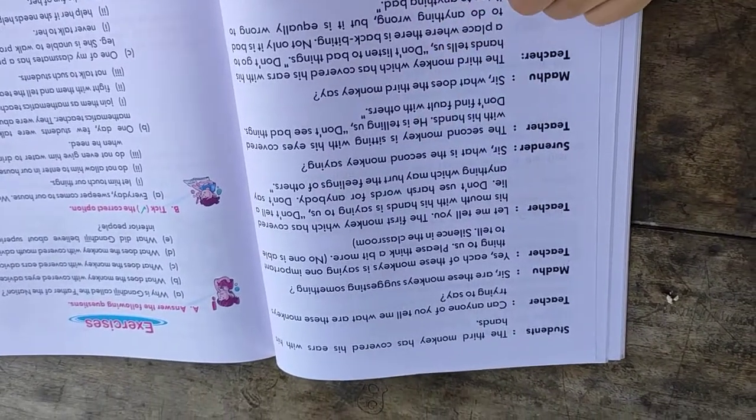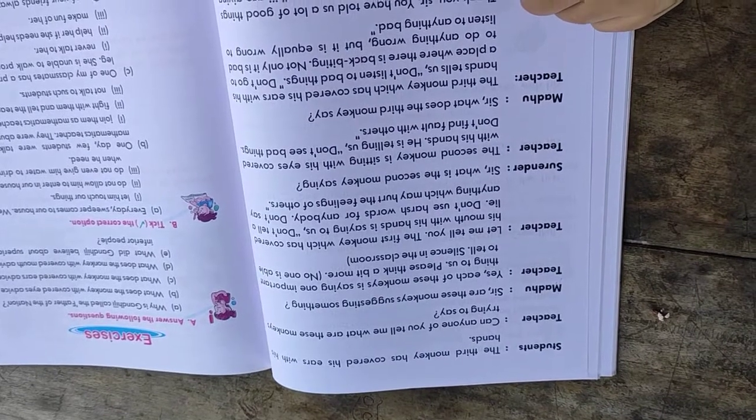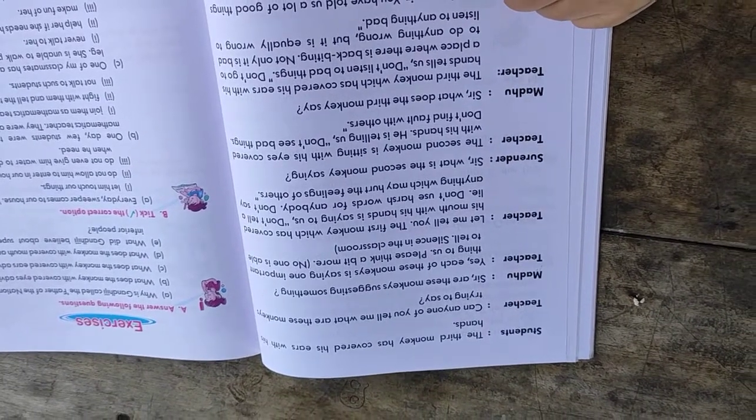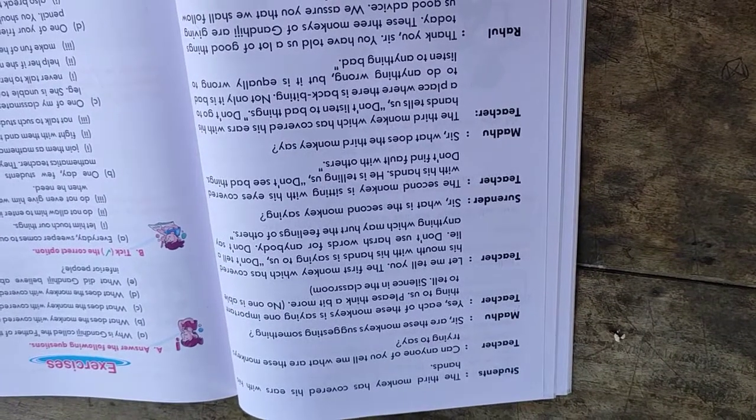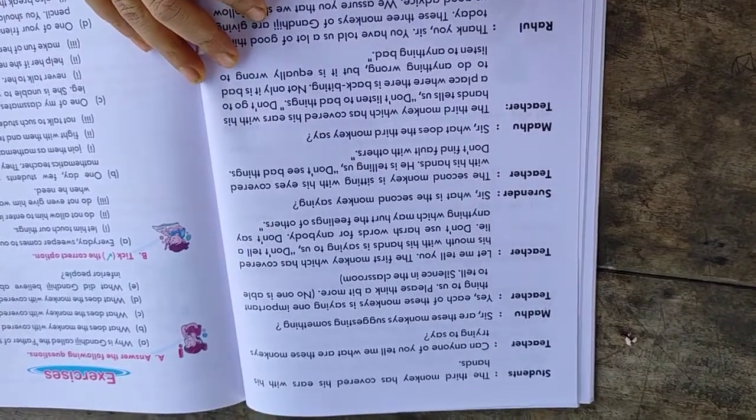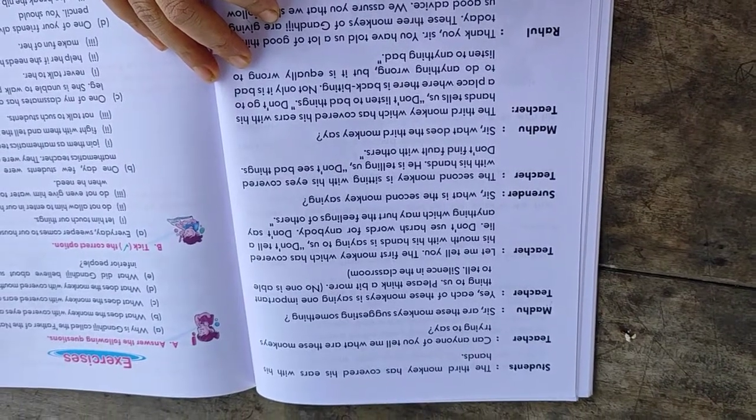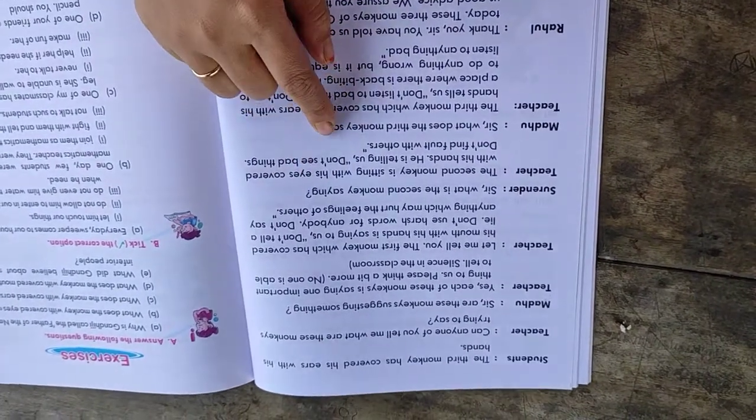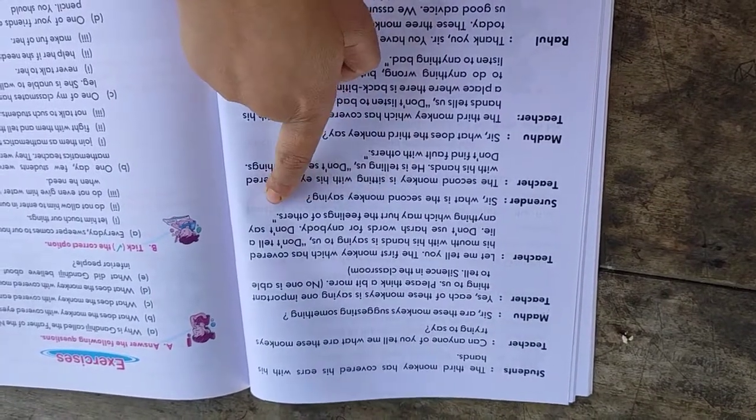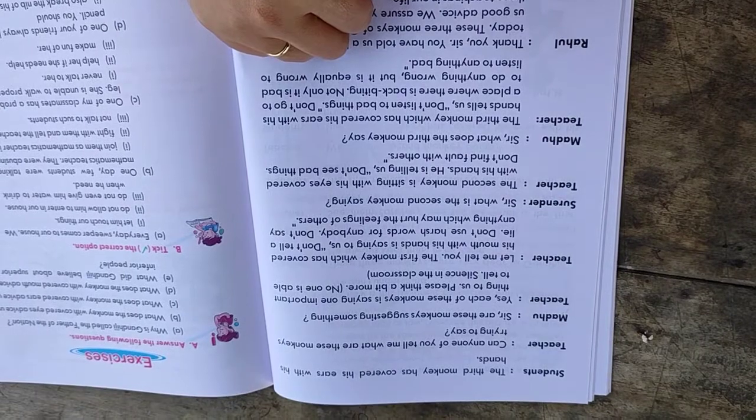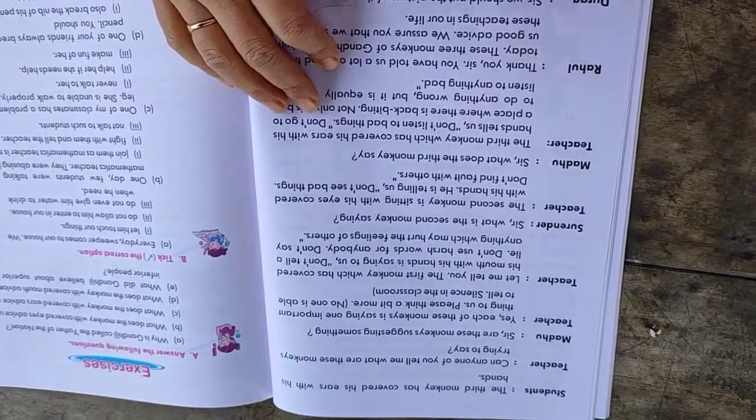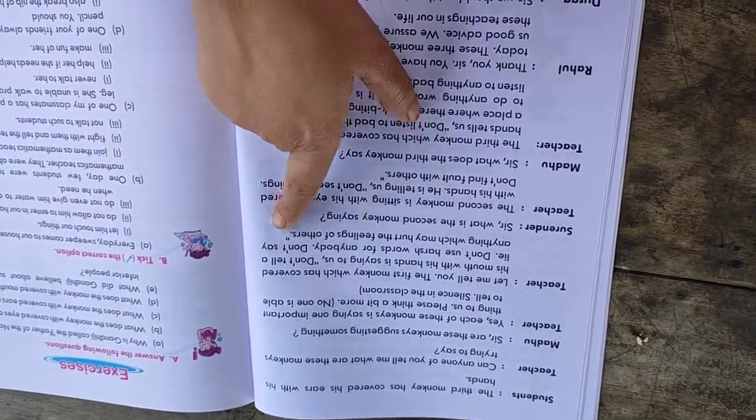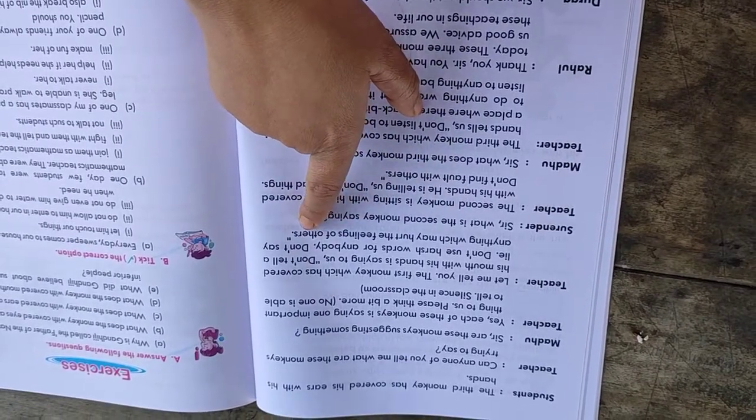Let me tell you. The first monkey which has covered his mouth with his hands is saying to us, don't tell a lie, don't use harsh words for anybody, don't say anything which may hurt the feelings of others.